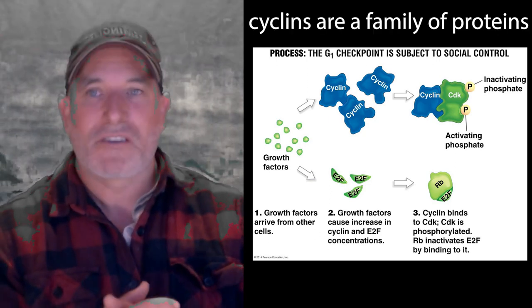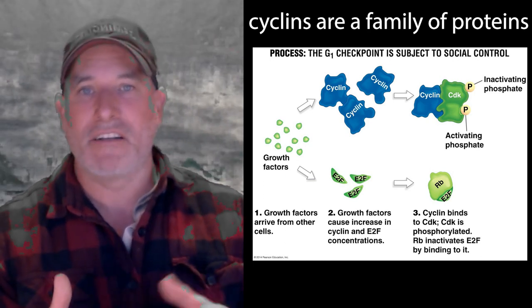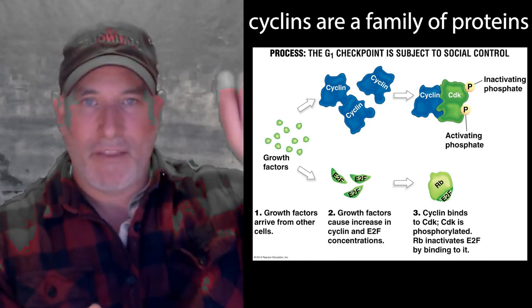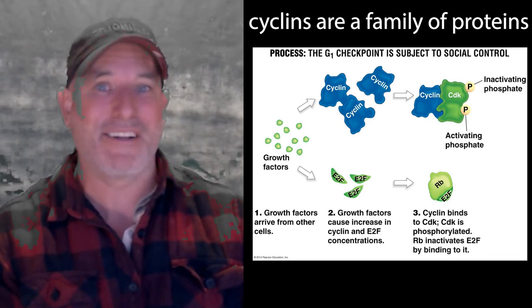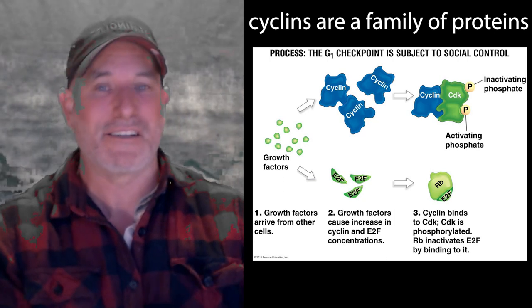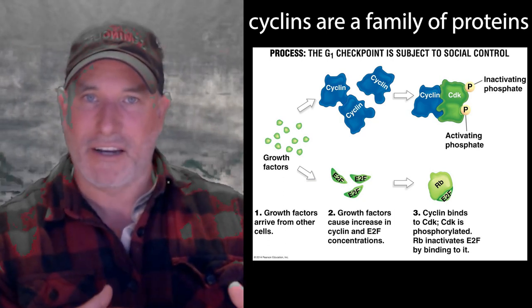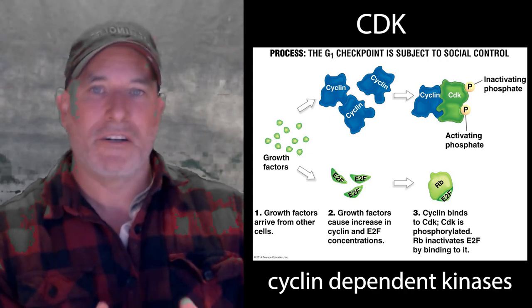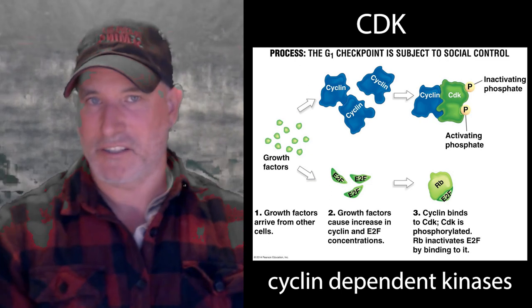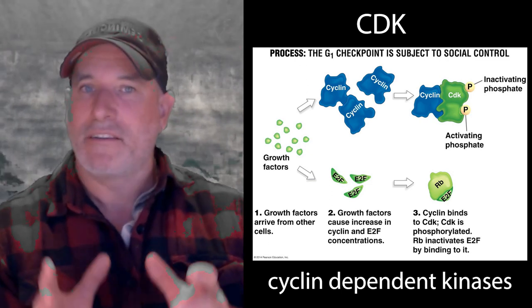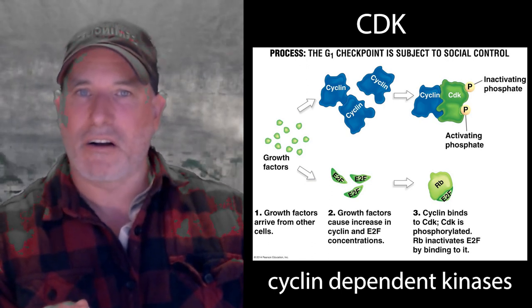Once again, we have our cyclins. Cyclins are a broad group of proteins. And they're called cyclins because they go up in concentration and they go down in concentration. And you have G1 cyclins, you have G2 cyclins, and you have mitotic cyclins. So you have cyclins that are active at different parts of the cell cycle. And then, of course, you have your CDKs, cyclin-dependent kinases. Kinases are enzymes that phosphorylate other molecules. So now let's take a closer look here. Let's go dive right in.